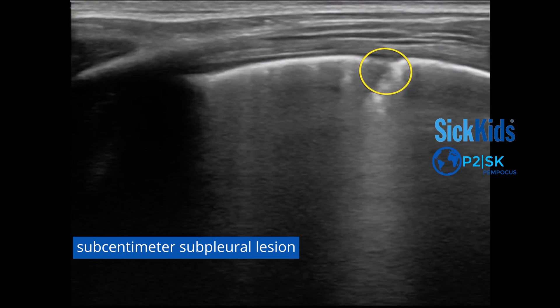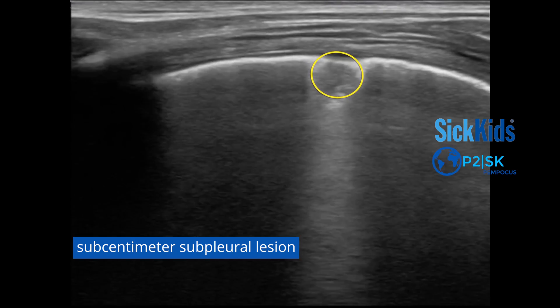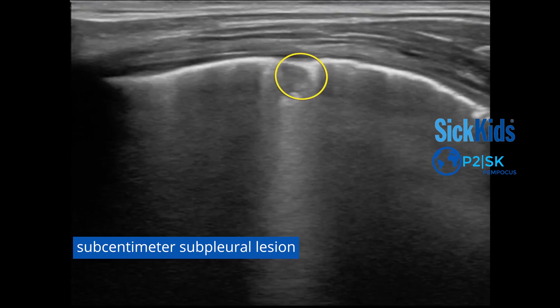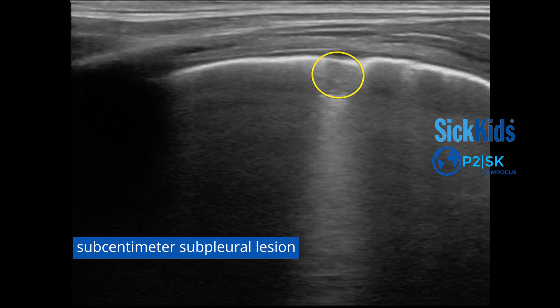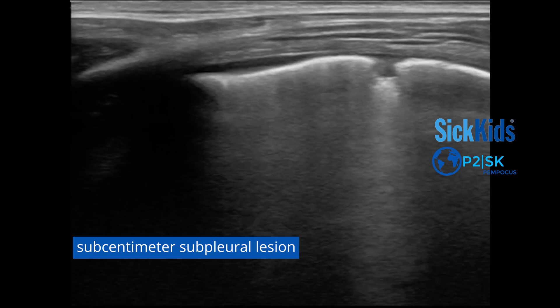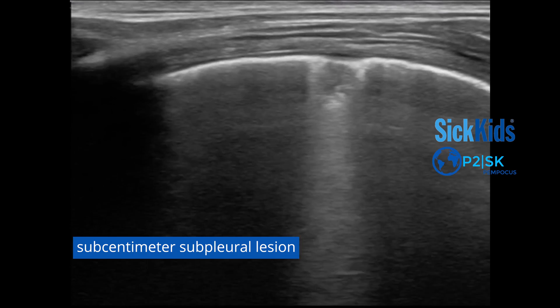Even these little one centimeter or less dark areas that may or may not have that punctate hyperechoic air within them, we call a subpleural subcentimeter consolidation. And we always have, since the beginning of this point of care lung ultrasound literature, labeled those things as consolidations.